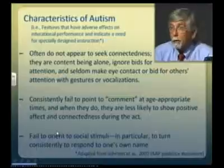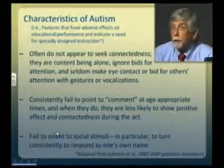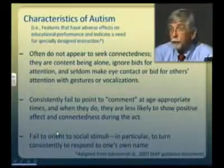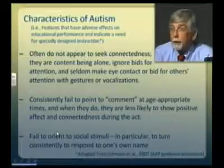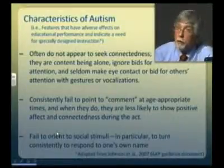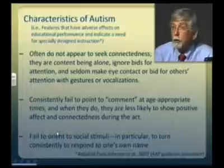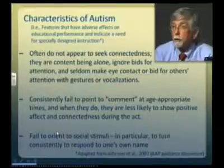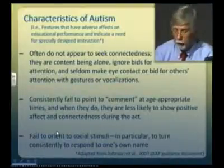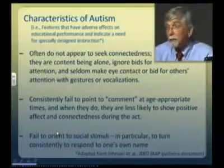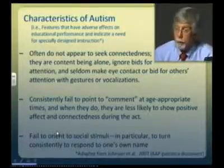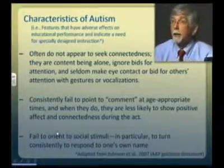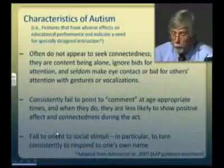When a child ignores bids for attention, it points immediately to a preliminary goal for specially designed instruction: teaching the child to attend to bids for attention — so that when a teacher speaks the child's name, the expectation is that the child will orient toward the teacher and make eye contact. This is a skill that many young children on the autism spectrum with a classic presentation don't demonstrate, and it is often a part of the very early goals of intervention.